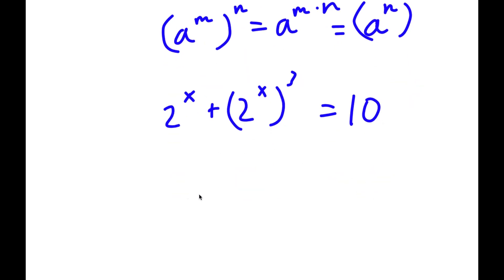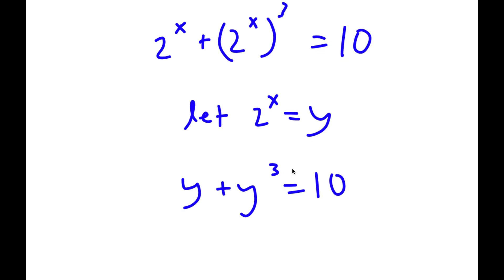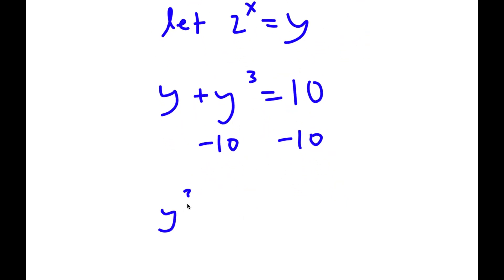Now I'm going to let 2 to the power of x equal y. So now I have y plus y to the power of 3 is equal to 10. If I subtract 10 on both sides, I get y to the power of 3 plus y minus 10 is equal to 0.